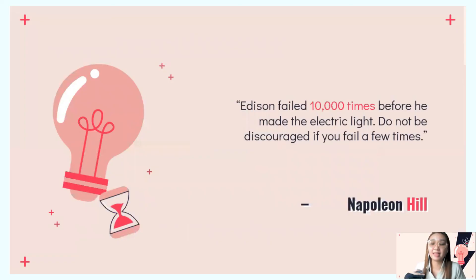But before that, I want to leave this quote to you: 'Edison failed 10,000 times before he made the electric light. Do not be discouraged if you fail a few times' by Napoleon Hill. That would be all for the objective part of our lecture. Kindly tune in for our computational part. Good day! See you in our next video.